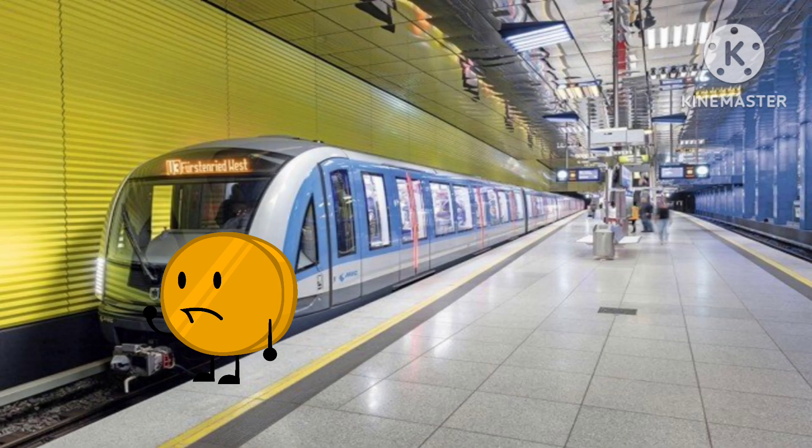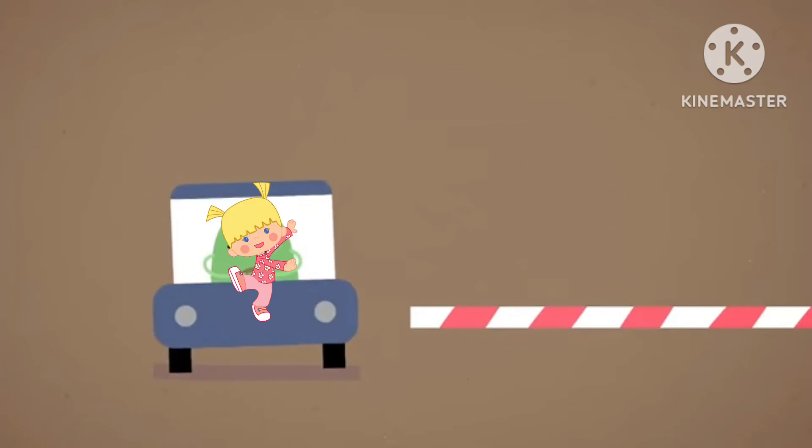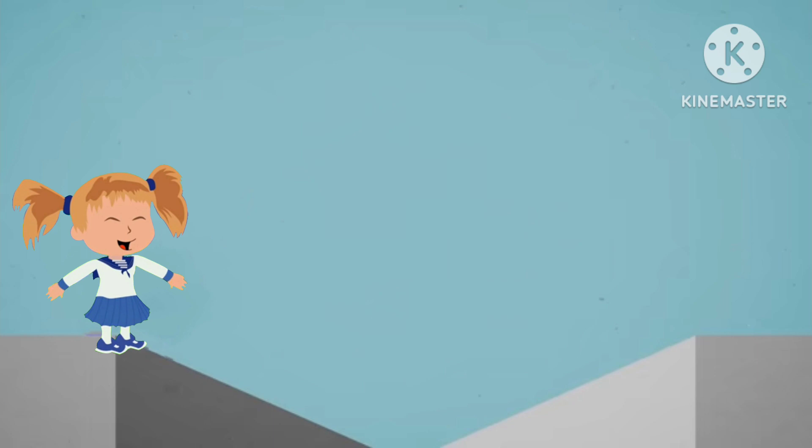Stand on the edge of a train station platform, drive around the boom gates at a level crossing, run across the tracks between the platforms.